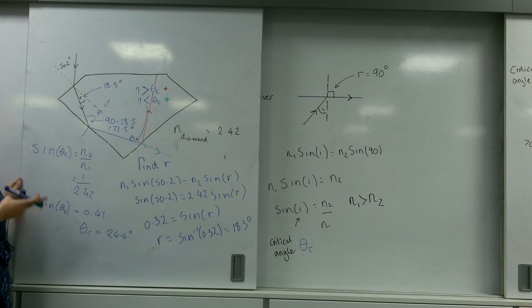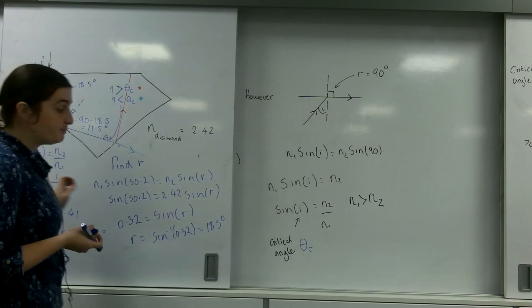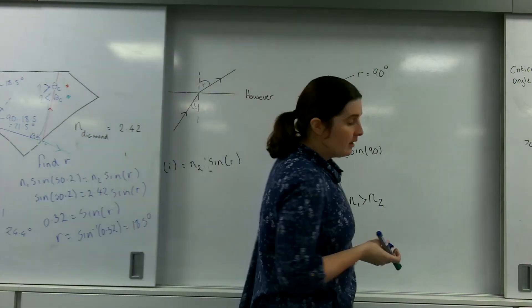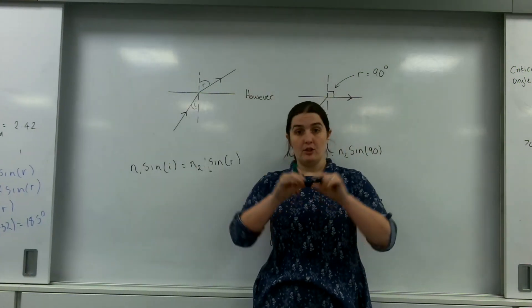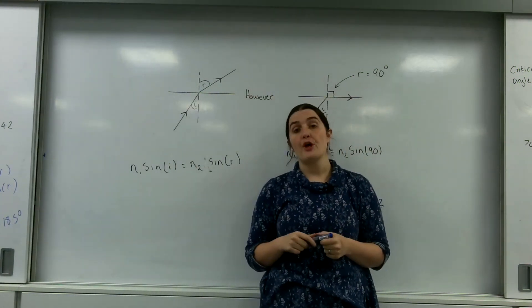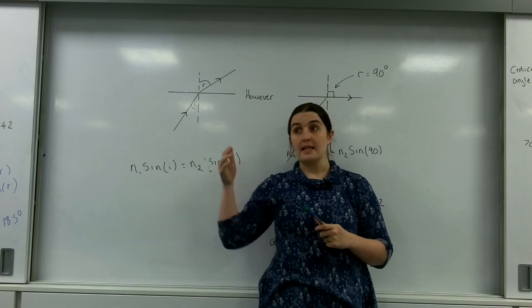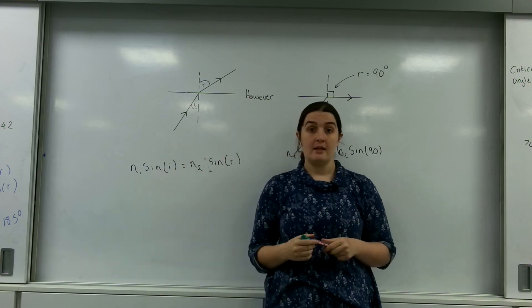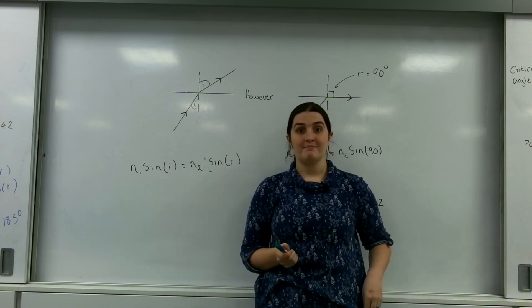Another use for total internal reflection, of course, is fibre optics. So fibre optic cable is a long cable that uses total internal reflection to send a signal from A to B, and that will be on the next video.